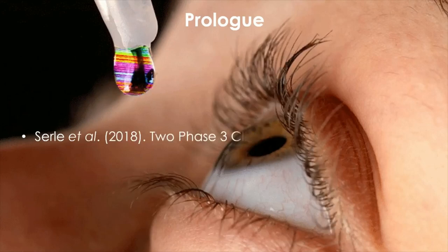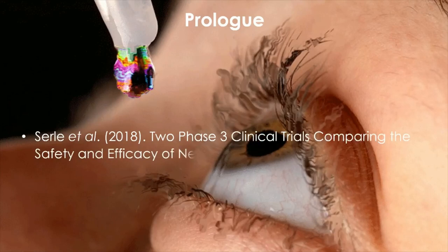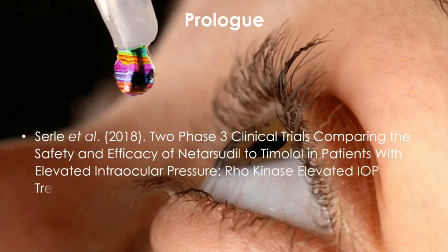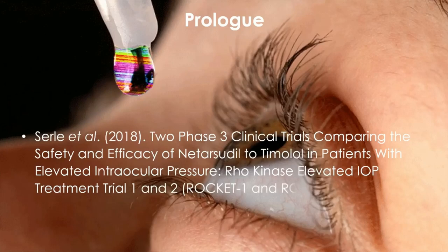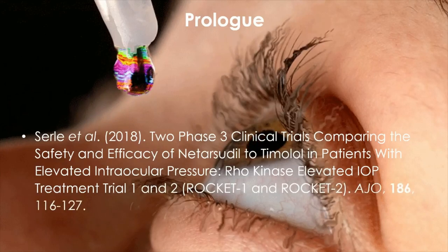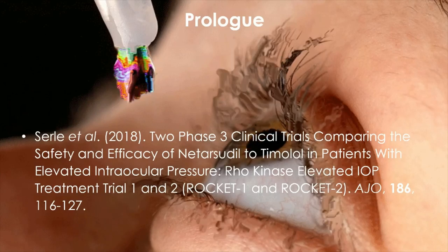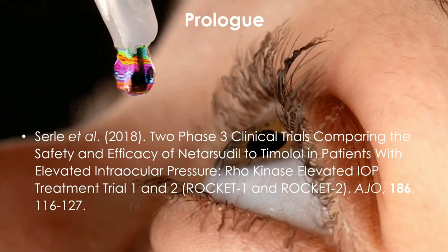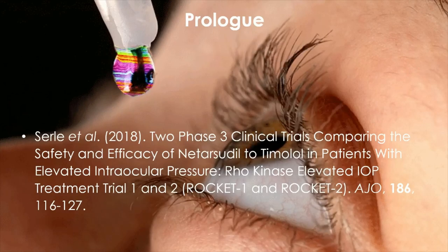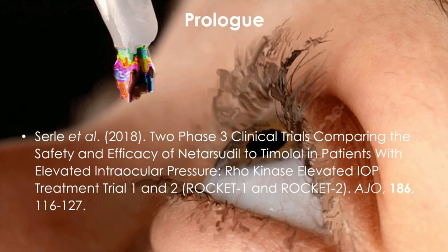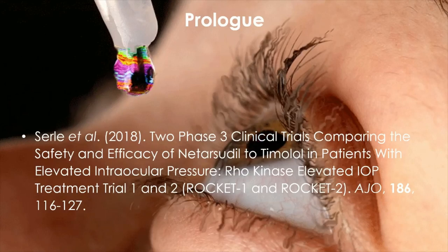One of the major risk factors for glaucoma is ocular hypertension, and lowering the intraocular pressure is probably the only manageable and modifiable risk factor to slow the progression of this blinding disease. The traditional first-line approach has been topical pharmacotherapy. Among others, a newer generation of drugs called Rho-kinase inhibitors were compared against a popular beta blocker called timolol in a clinical trial started in 2014, with results published in 2018.